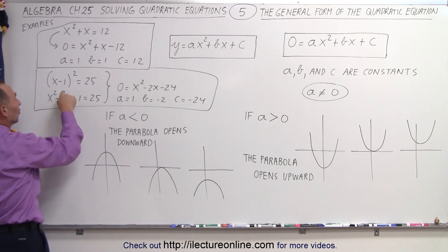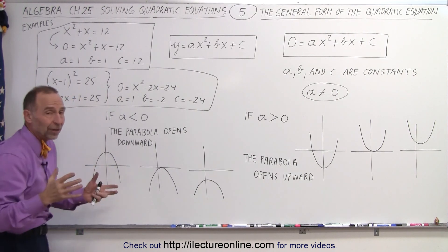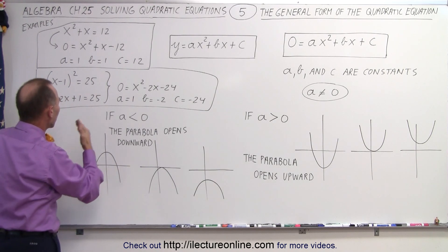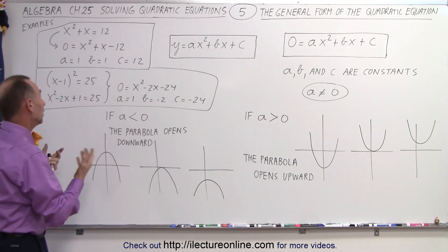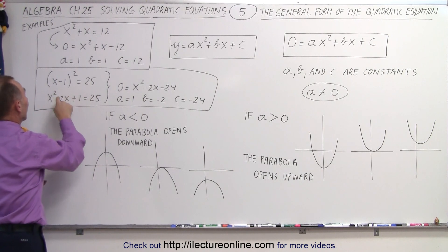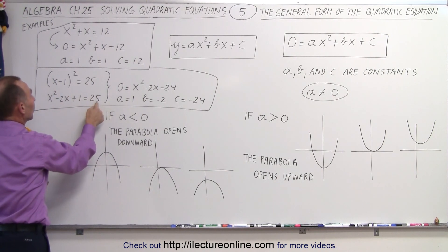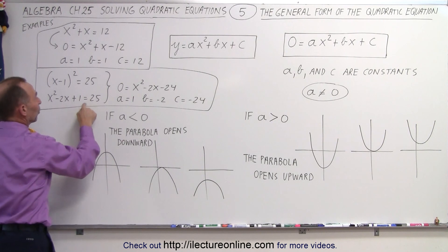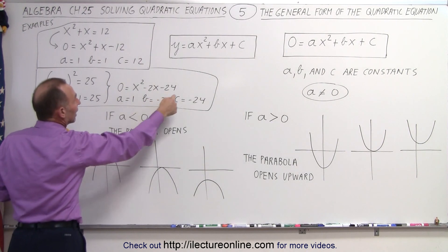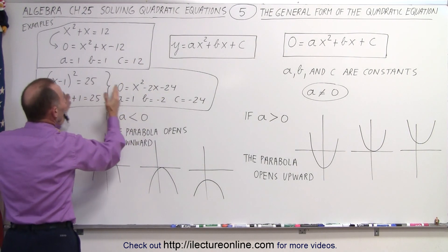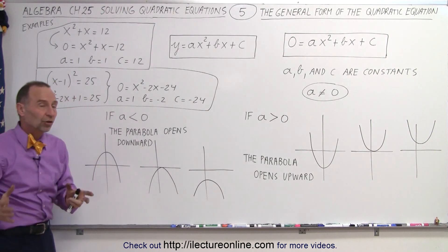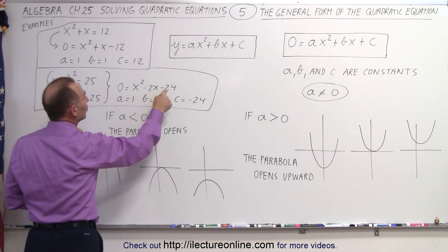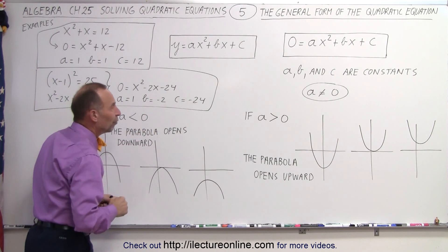Sometimes we may see something that looks different, and you might think: is that really a quadratic equation? It is, because we can square the left side, which makes it look like this. We move the 25 across, making it negative 25 plus 1, which equals negative 24. You can see that we can make this look like a quadratic equation in the general format, where a equals 1, b equals negative 2, and c equals negative 24.